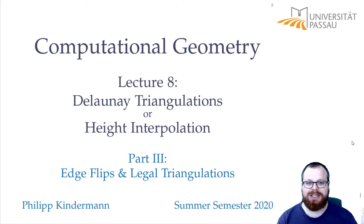To find the angle-optimal triangulation, we want to iteratively do small improvements. These small improvements we want to do via edge flips. Then we want to find so-called legal triangulations and relate them to the angle-optimal ones.